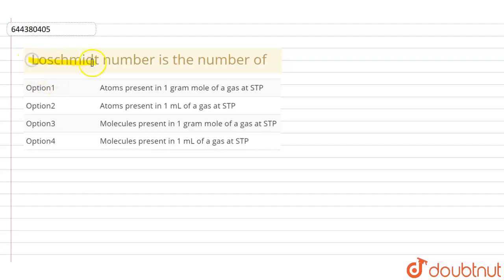The question is: Loschmidt number is the number of atoms present in one gram mole of a gas at STP, atoms present in one ml of a gas at STP, molecules present in one gram mole of a gas at STP, or the last option is molecules present in one ml of a gas at STP.